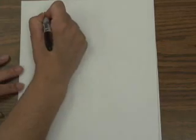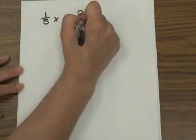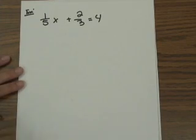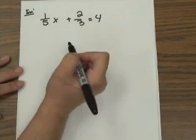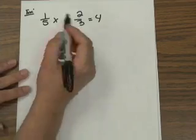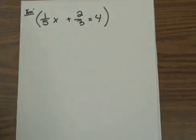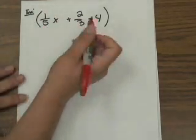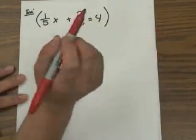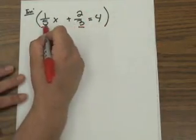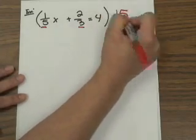So far we've looked at how to simplify expressions. Now we want to make sure we know how to solve equations. Let's look at a problem that involves fractions. In order to solve, we first want to eliminate the fractions to make things easier. We'll multiply the entire equation — every term including 1/5 x, 2/3, and 4 — by a number that cancels the 5 and 3 from the denominators. Multiplying 5 times 3 gives 15, so we multiply the entire equation by 15.